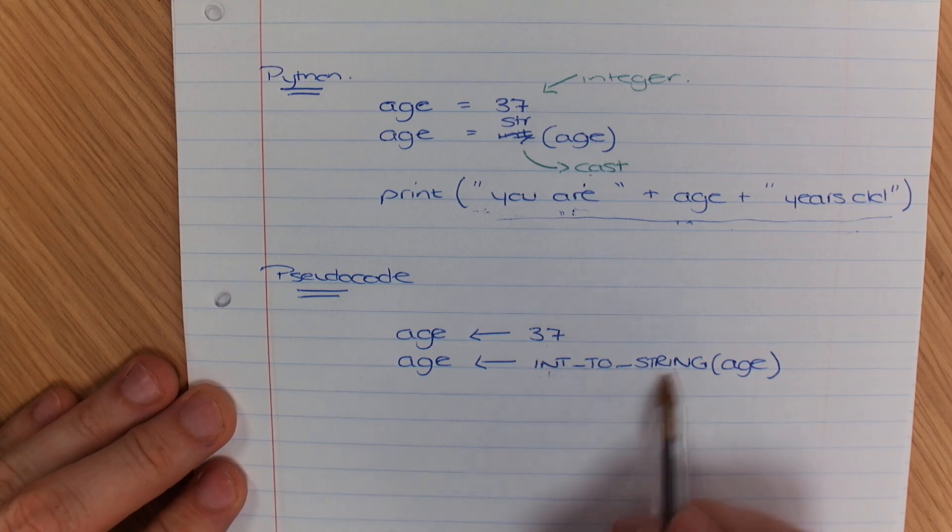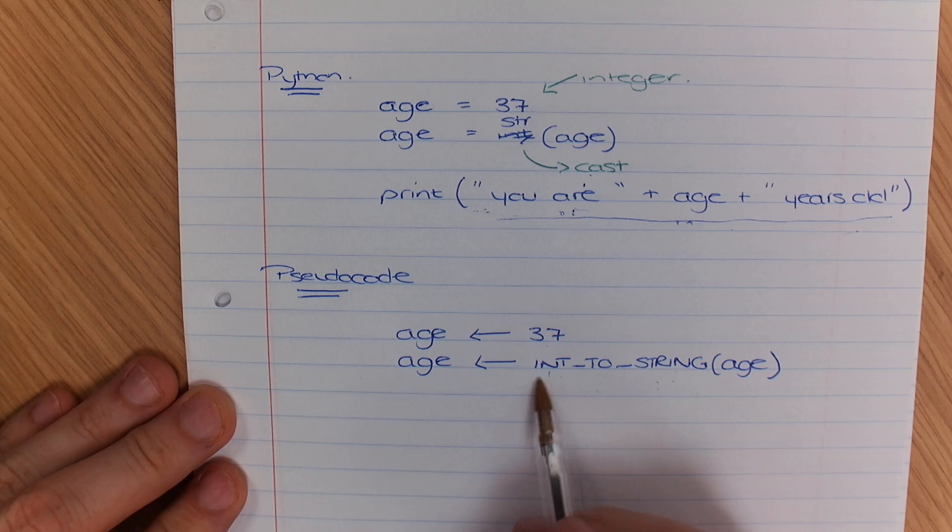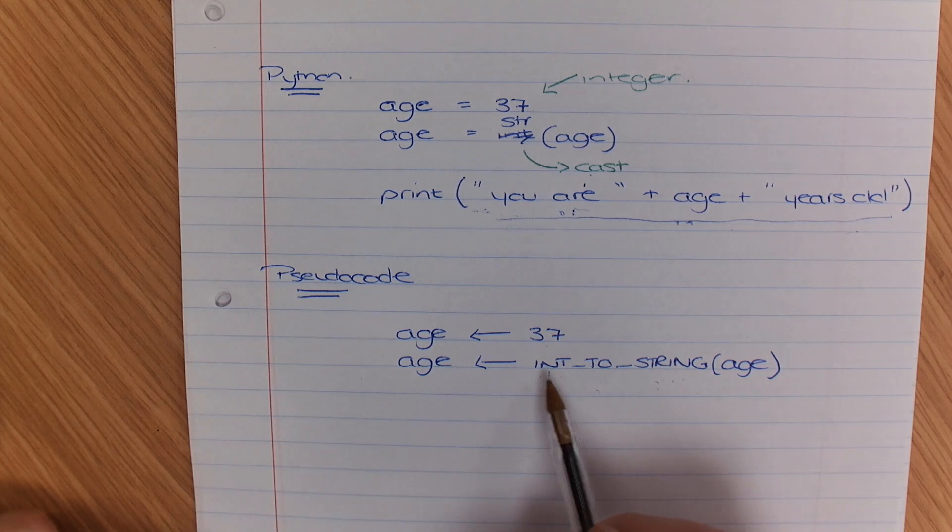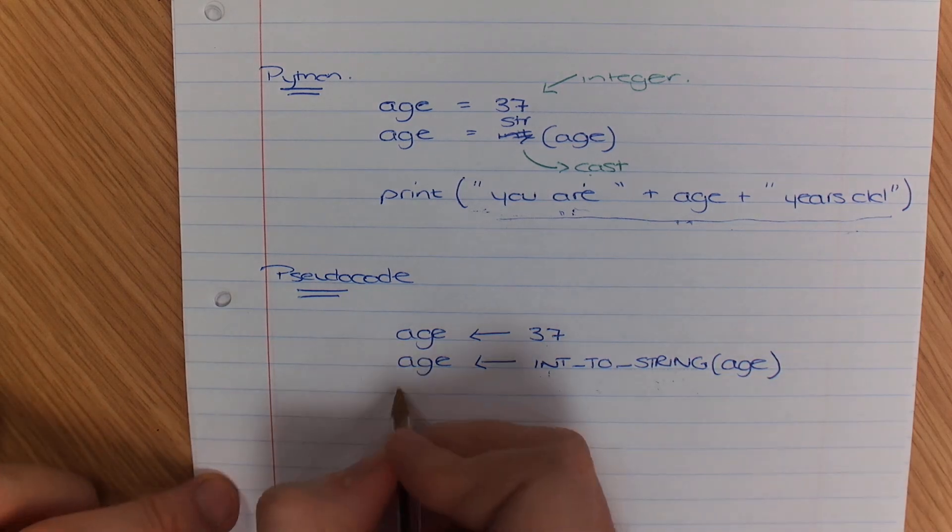So when you're converting different data types you say what it was originally and what it's going to. So you could have int to string, you could have string to int, int to real, string to real. So there's lots of difference and I think you should refer to the AQA pseudoguide to explore more of those options. So I've got the age here at 37, int to string so it's now a string and now I can output.